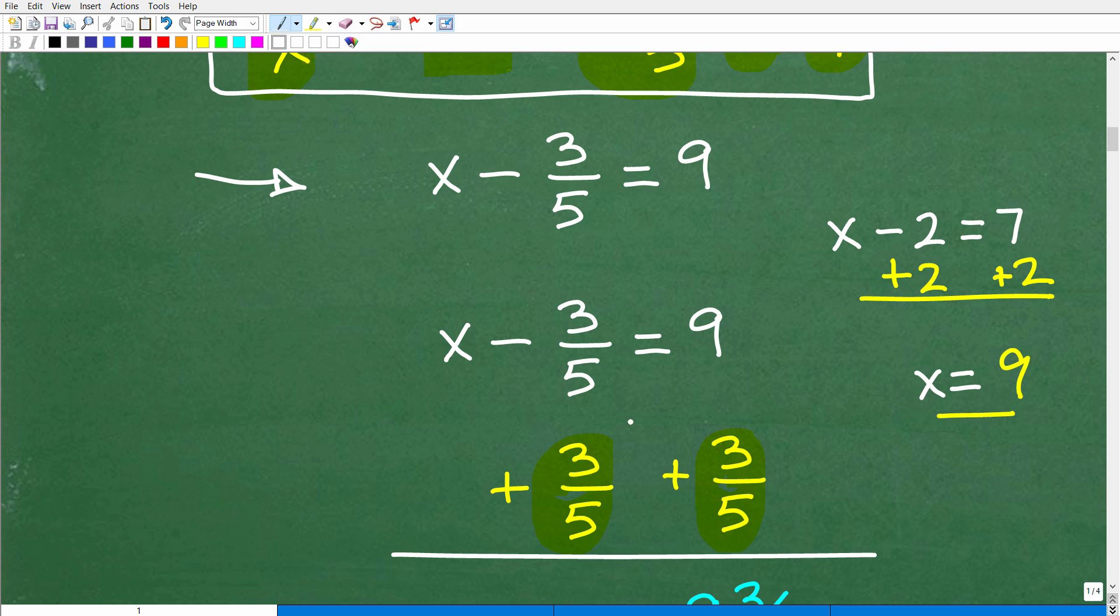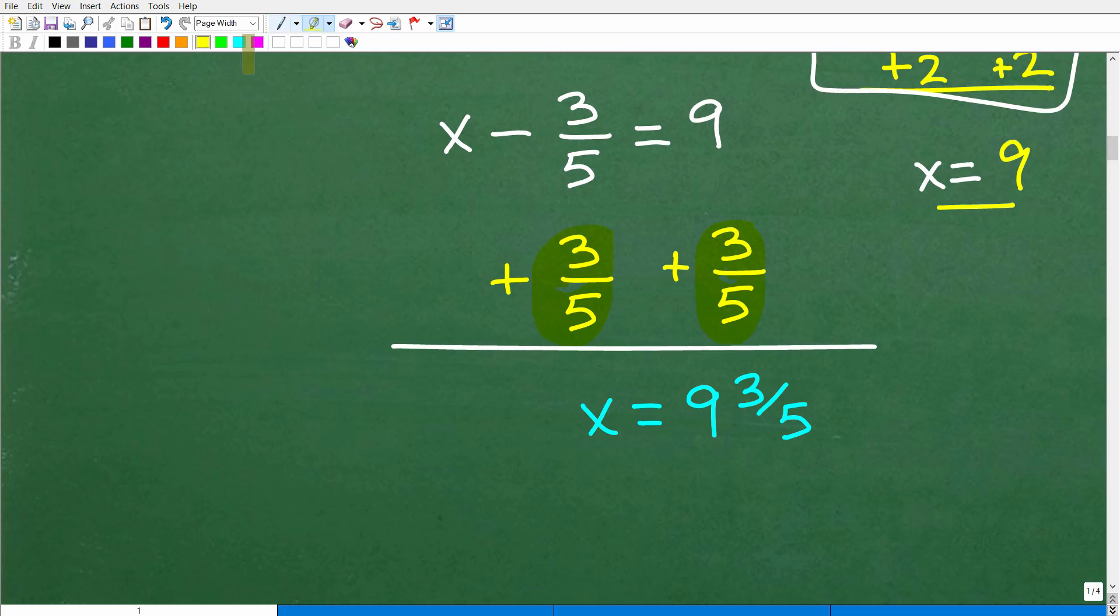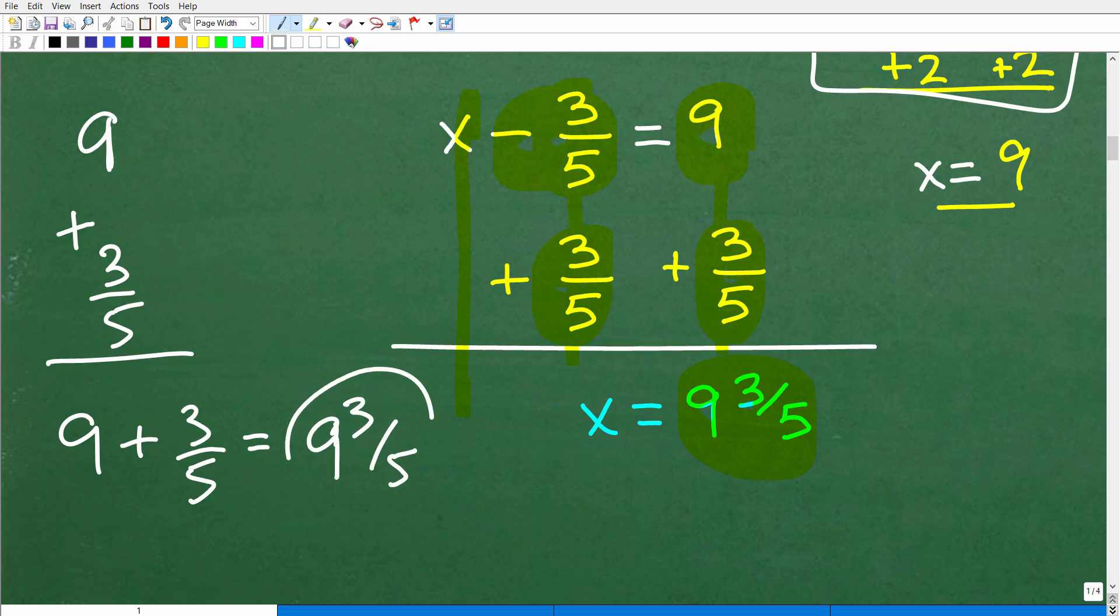Okay, so anytime you're working with fractions, or if you get a little bit confused on 'hey, am I doing the right steps?' try to reference a simple easy problem just to check yourself. Like no, I'm doing this correctly, I got the right idea. So here, what we're going to do is we're going to add three-fifths to both sides of the equation. And what do we have here? So negative three-fifths plus three-fifths is zero. So that's actually going to add down in a column manner. And then nine plus three-fifths is what? Nine and three-fifths. All right, that's what that means. Nine plus three-fifths is the same thing as nine plus three-fifths, which is the same thing as nine and three-fifths, that mixed number fraction.